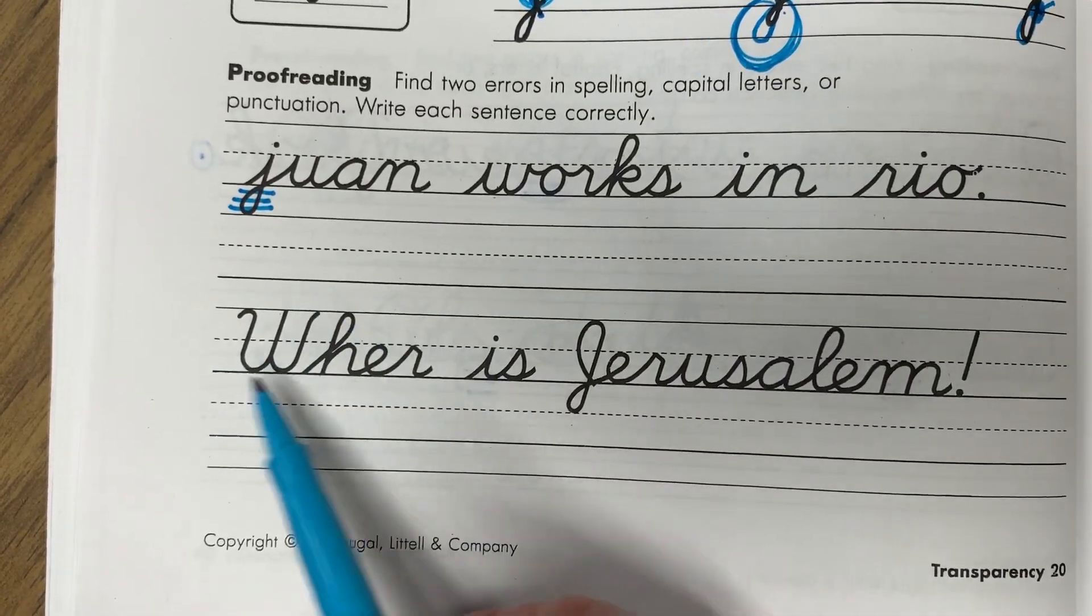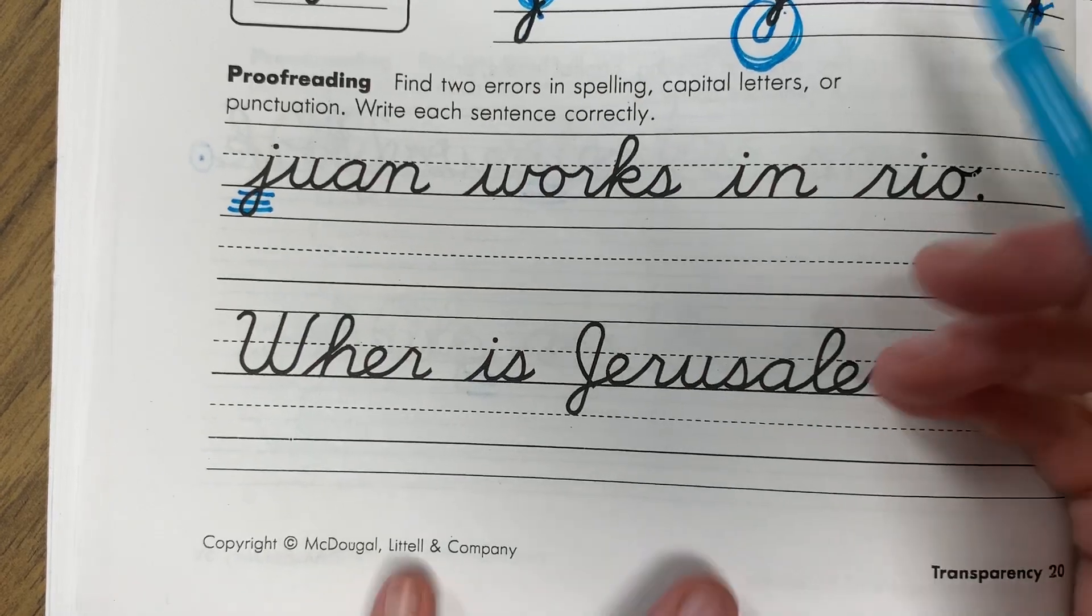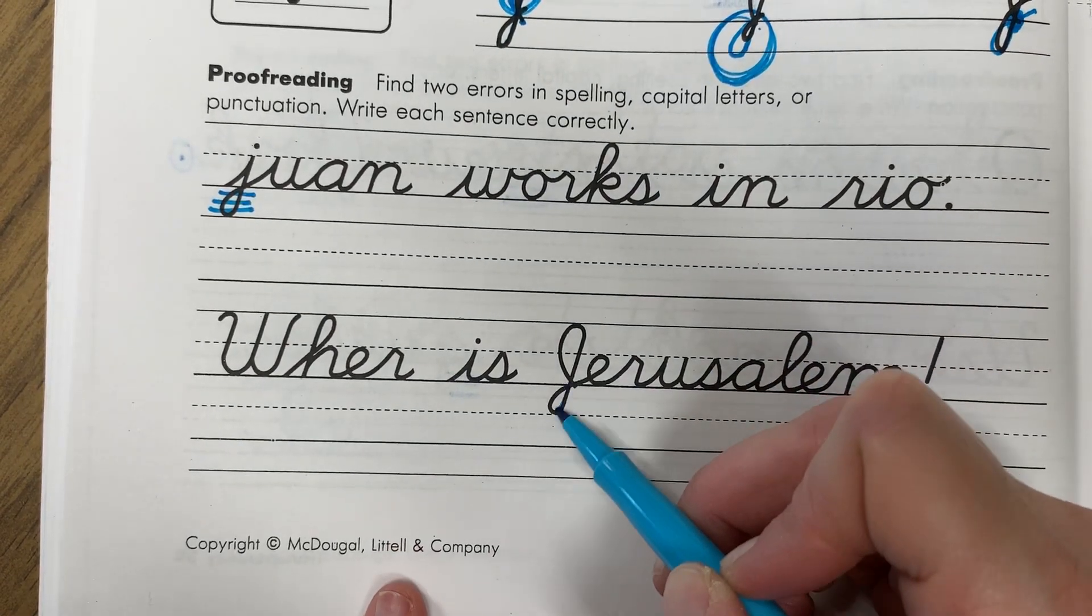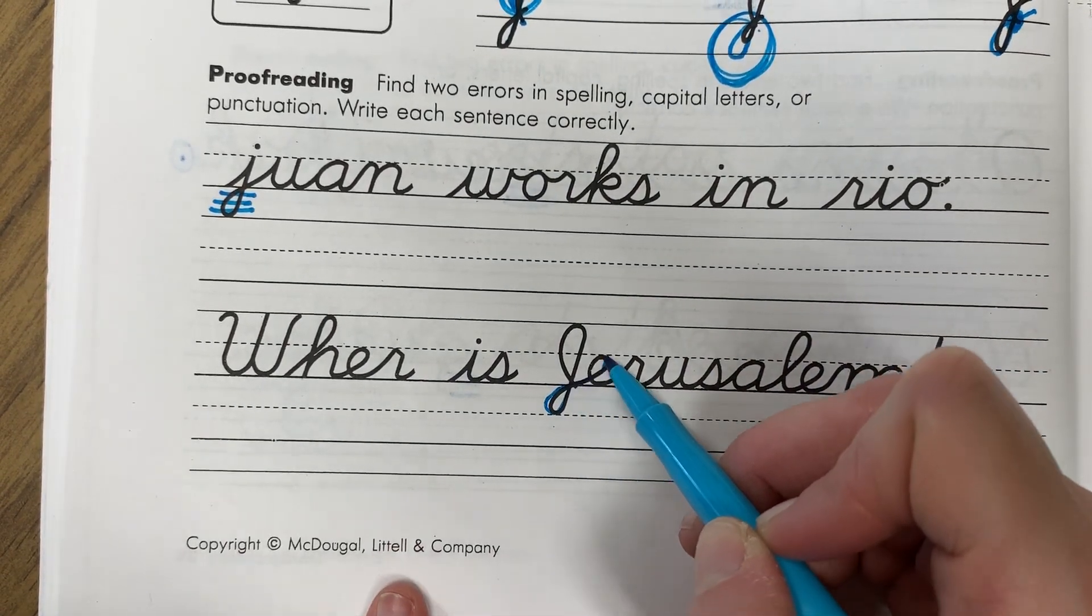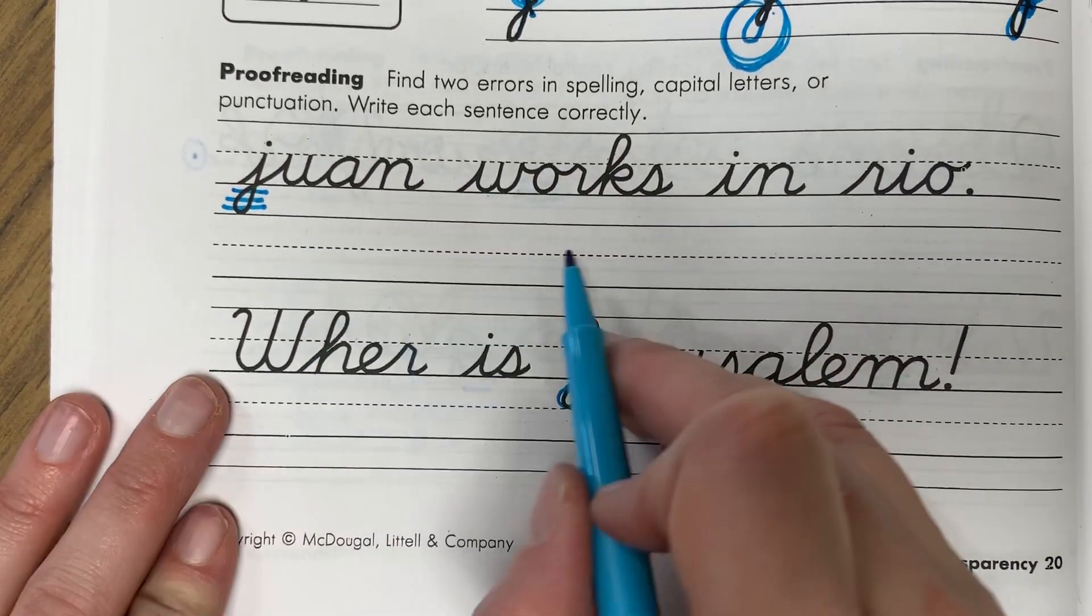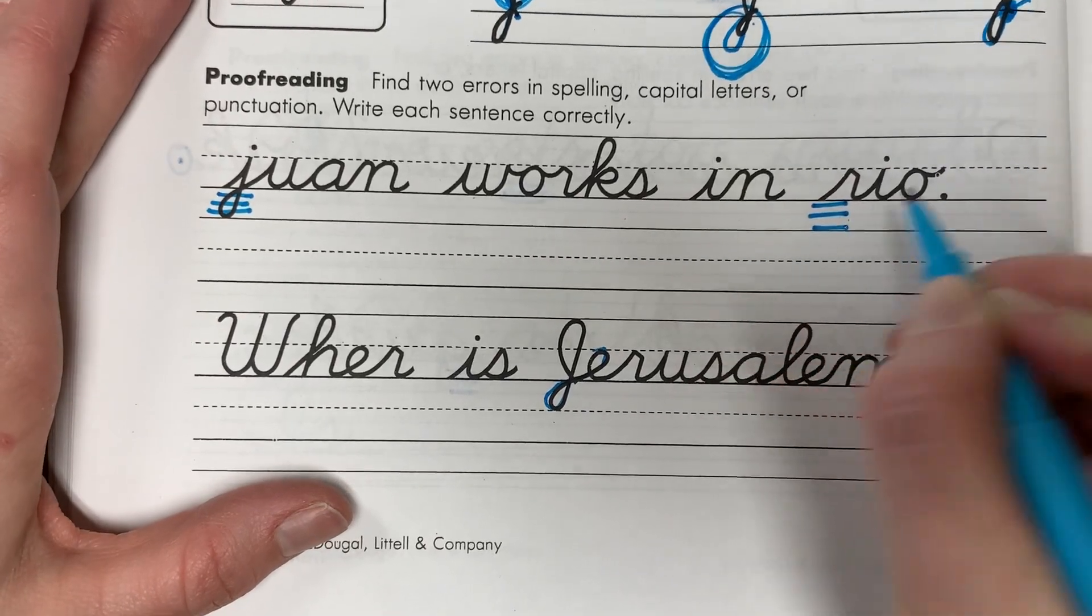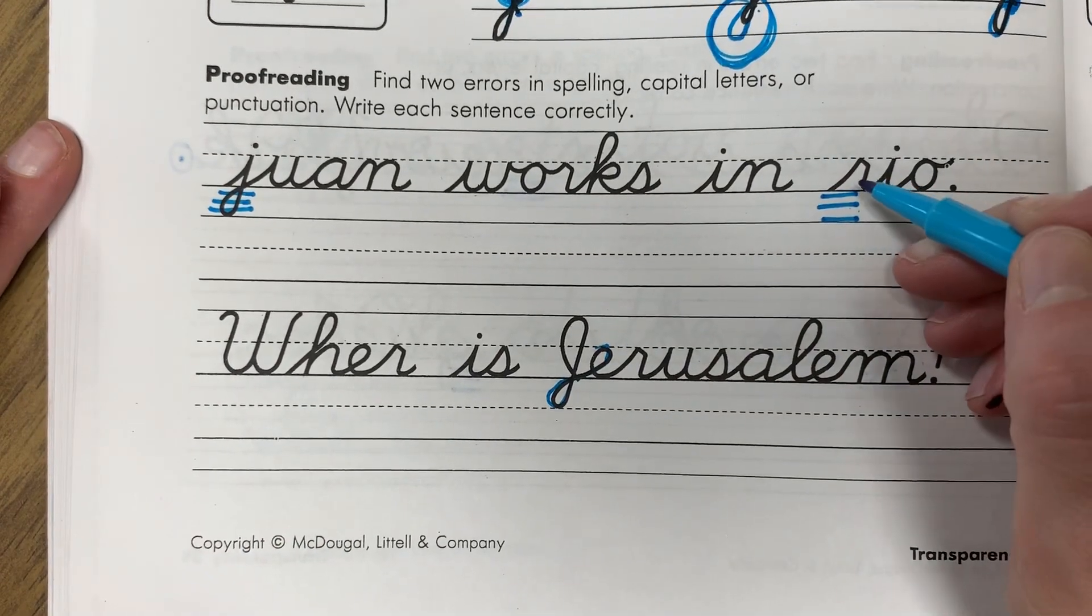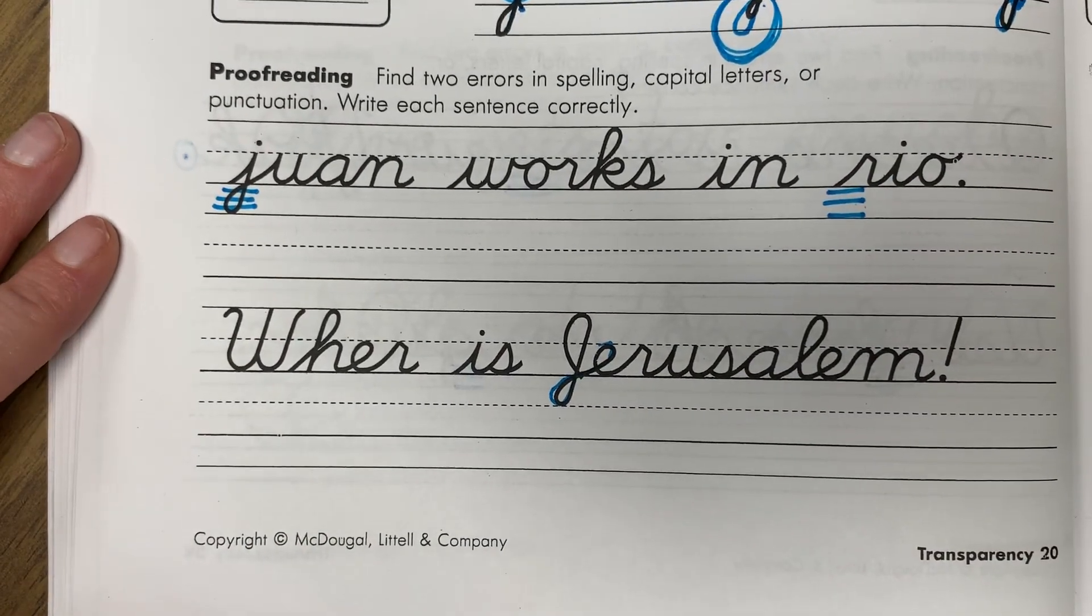Juan, and the J, the capital J goes straight into the next letter, like you can see here. So that part where we were just talking about coming back up, that would go straight into my next letter. Same with Juan. So Juan works in Rio. Rio is a specific place, so we need to make sure that we capitalize Rio also.